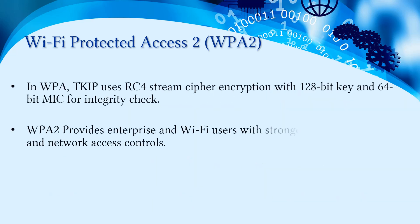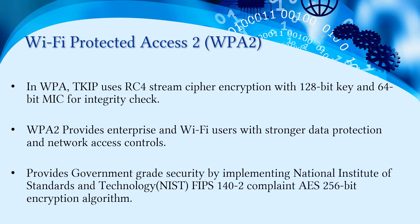In WPA, TKIP uses RC4 cipher encryption with a 128-bit key and a 64-bit MIC for integrity check. WPA2 provides enterprise and Wi-Fi users with stronger data protection and network access controls. It provides government-grade security by implementing NIST FIPS 140-2 compliant AES 256-bit encryption algorithm.